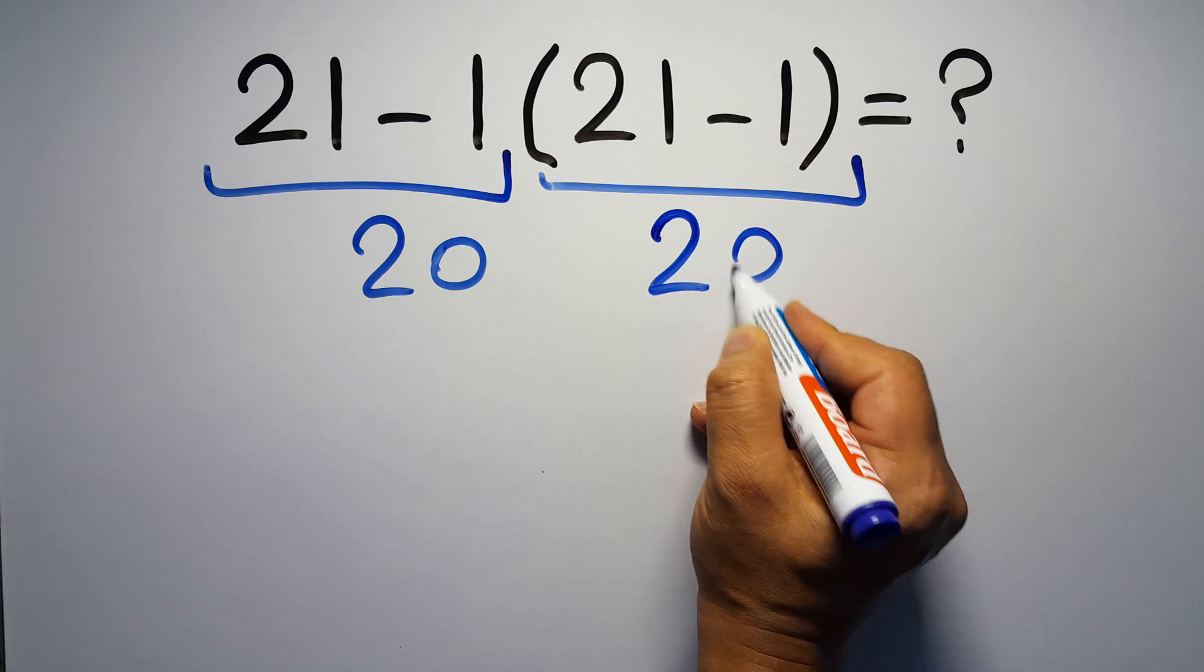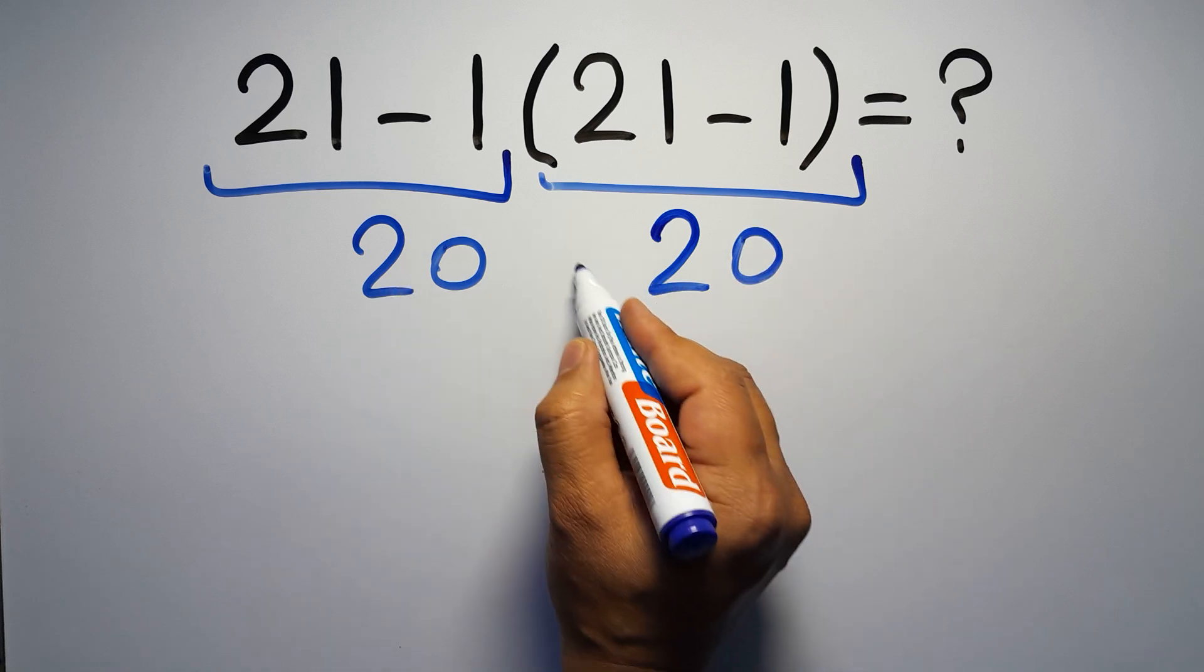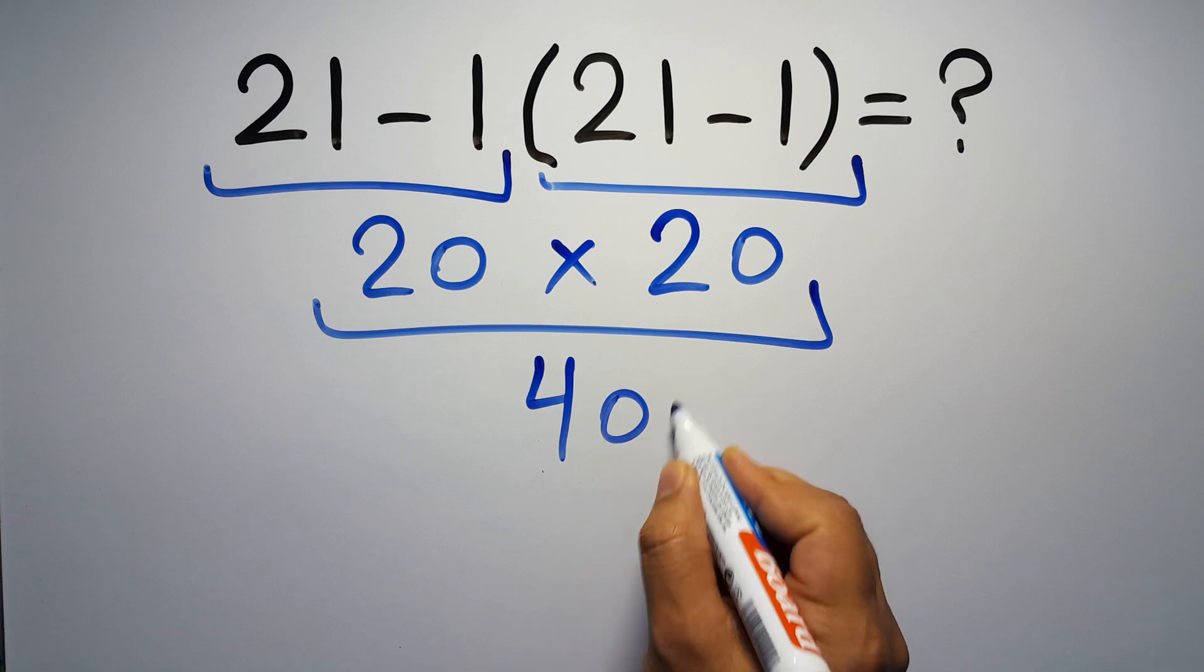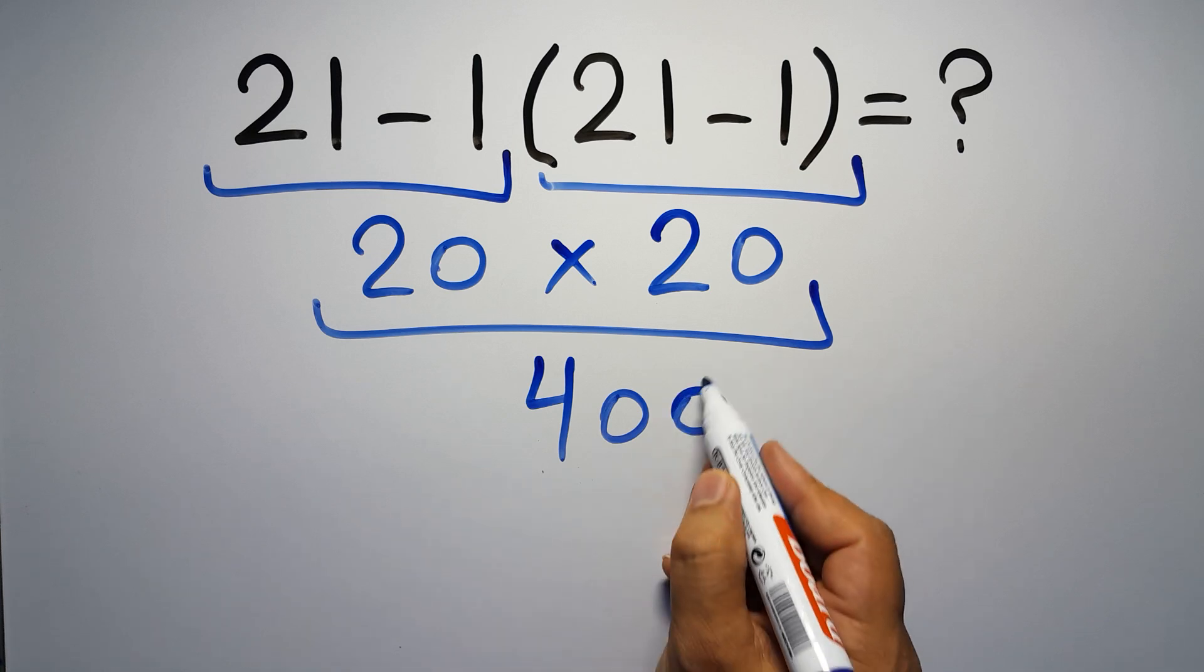Again we have here 20, so 20 times 20 which equals 400, but this answer is not correct,